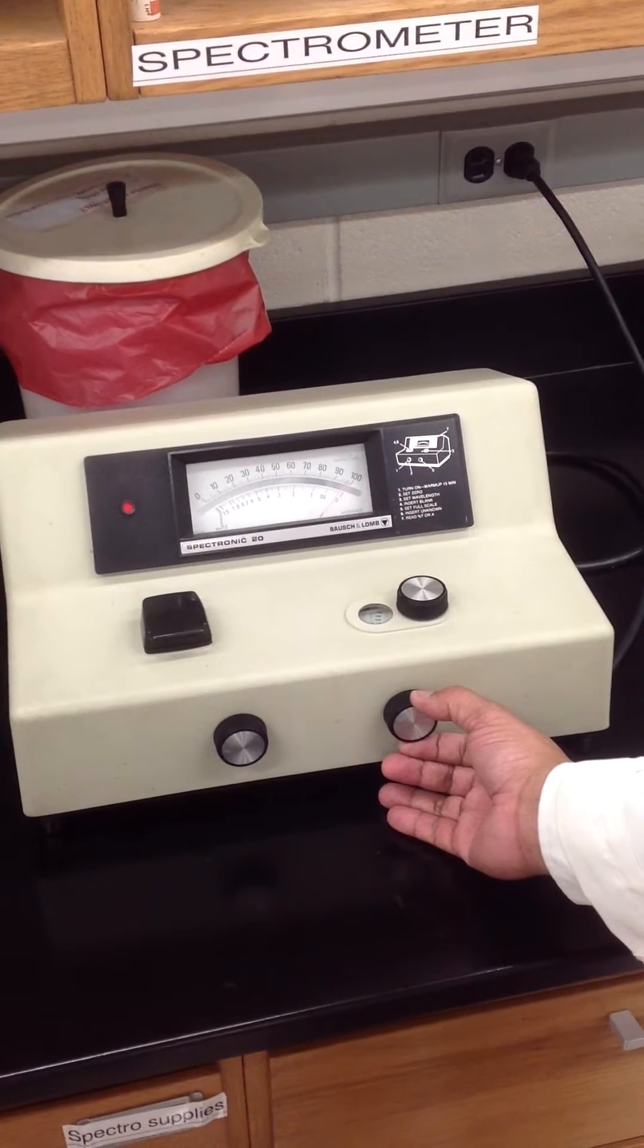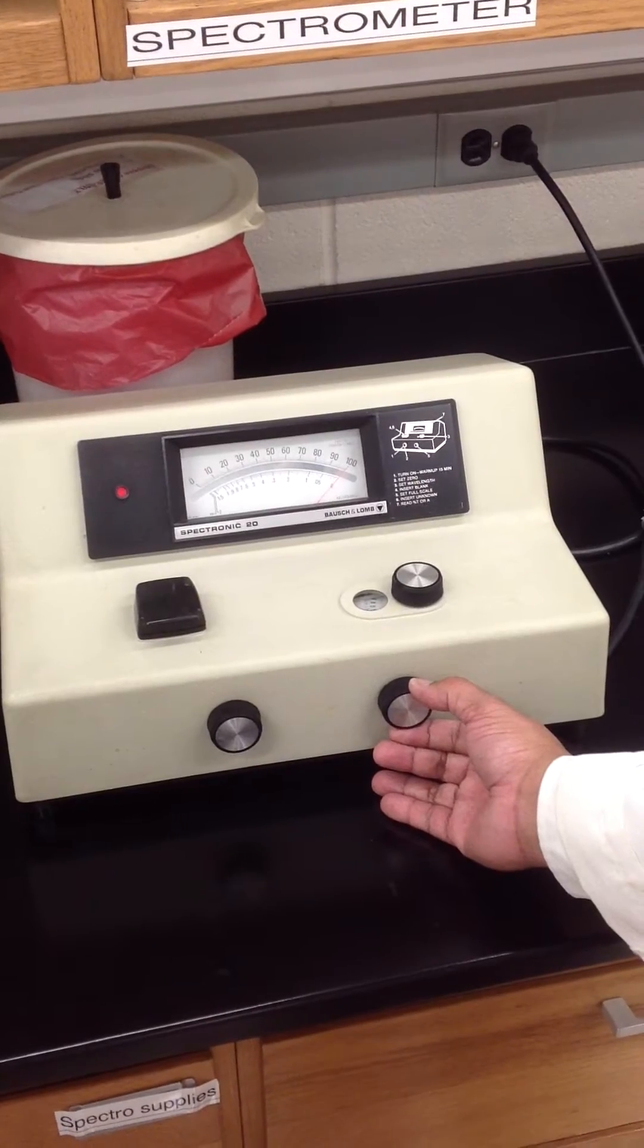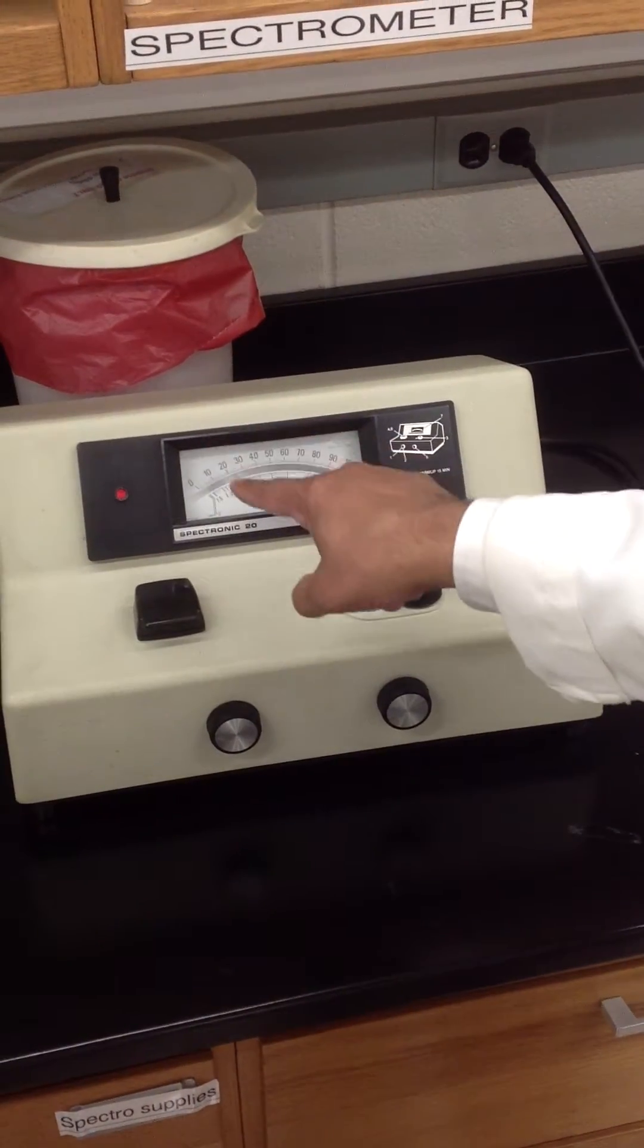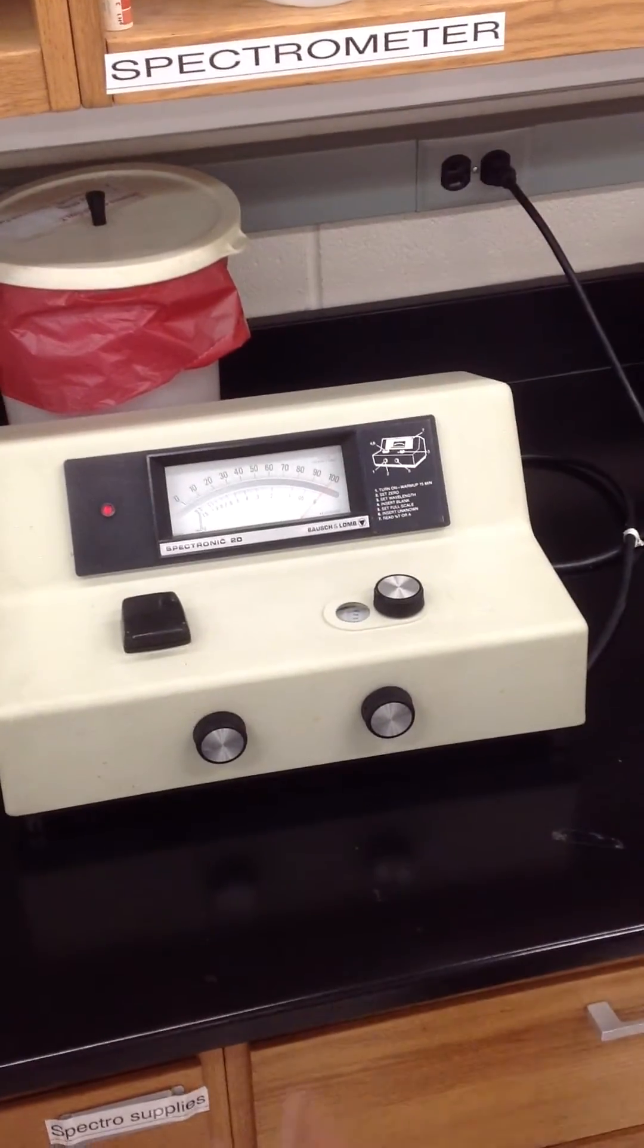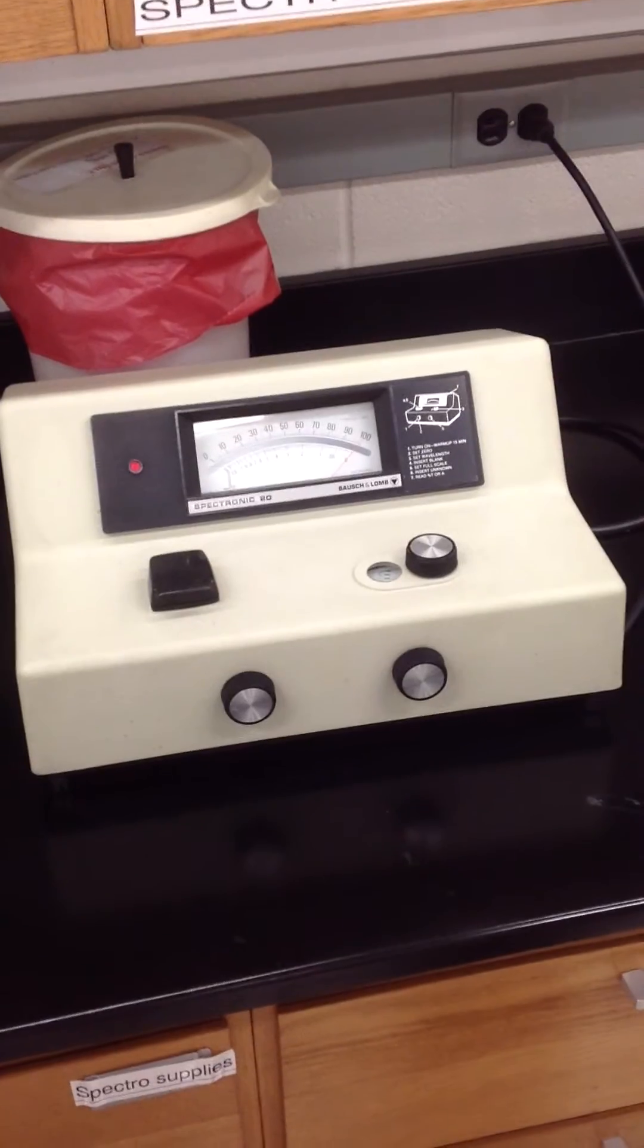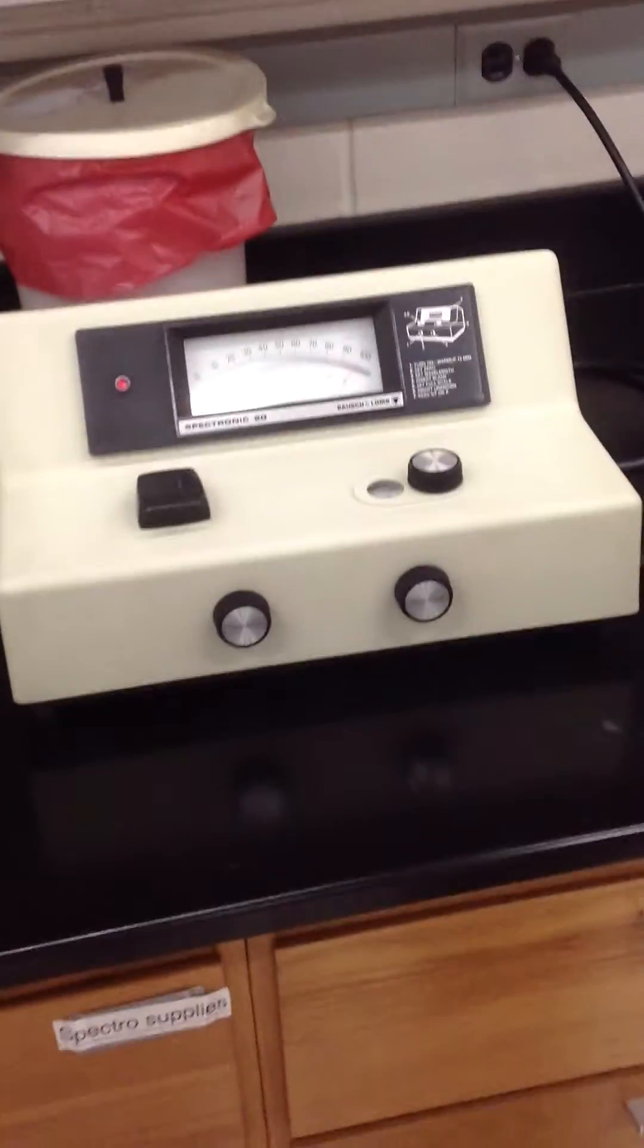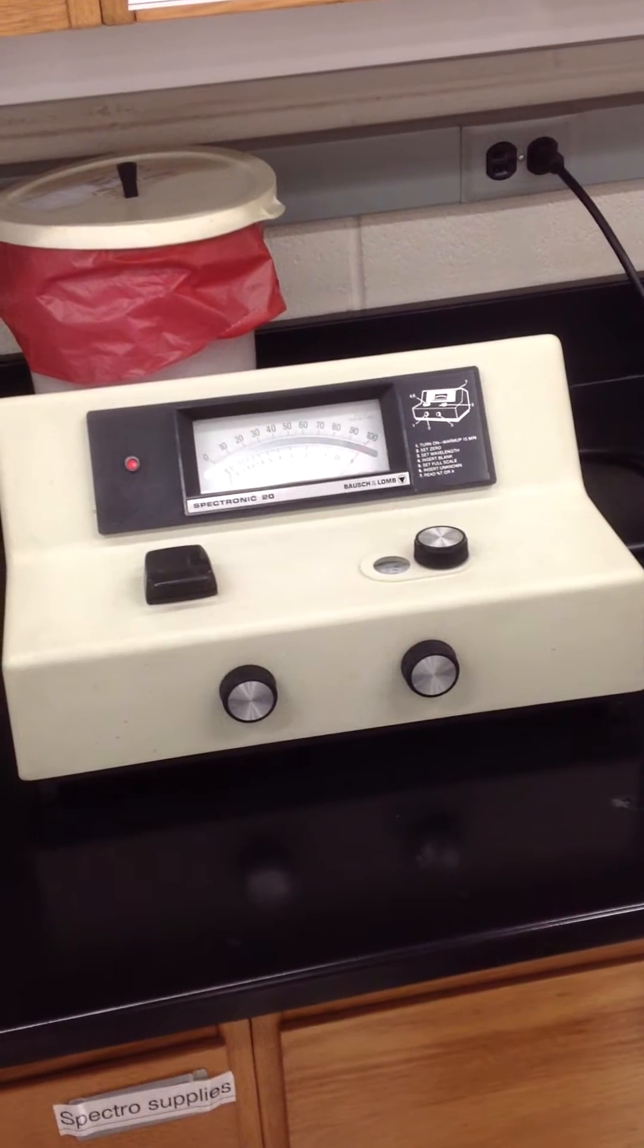So when you put it, you want to start full scale and we're using the lower scale. That's the absorbent scale. The upper scale is the transmittance scale. So if you're trying to do it with this, forget it. So that's not how it works.